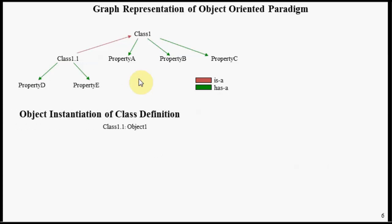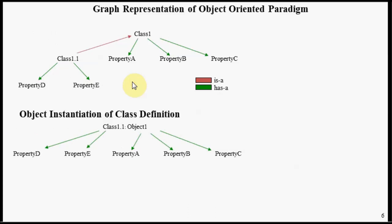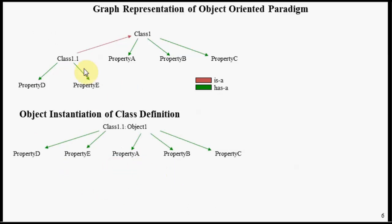Now let's look at what happens if we want to instantiate class 1.1 — the equivalent object graph. Assuming we want to instantiate class 1.1 and we're going to call that object 1, we first want to instantiate properties D and E. Then we want to look at this inheritance 'is a' link to inherit properties A, B, and C, which is what you see down here.